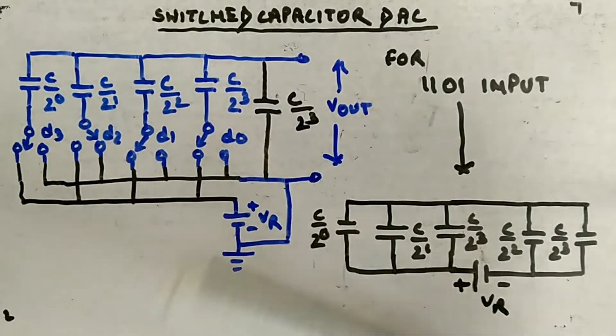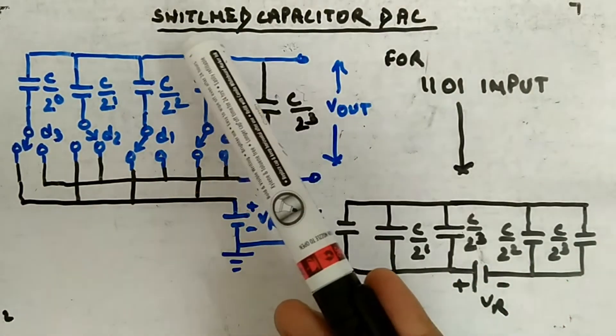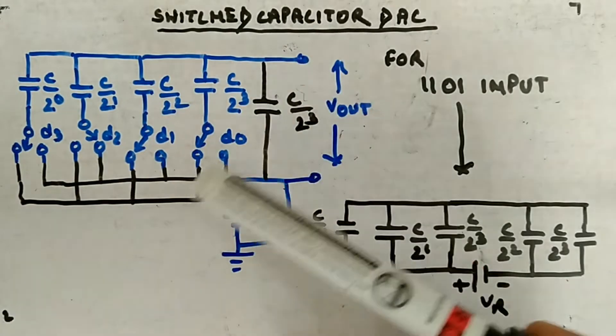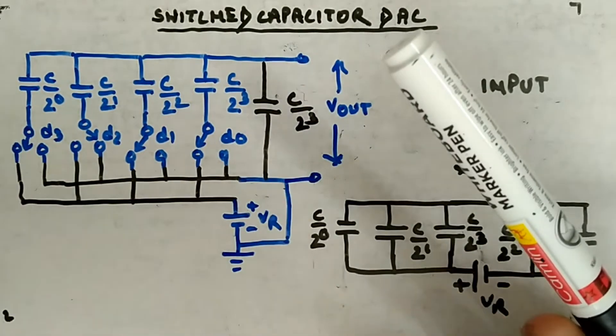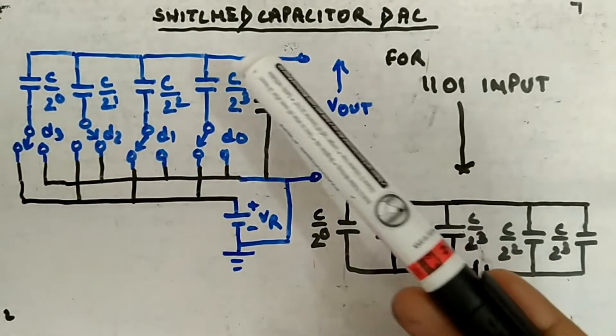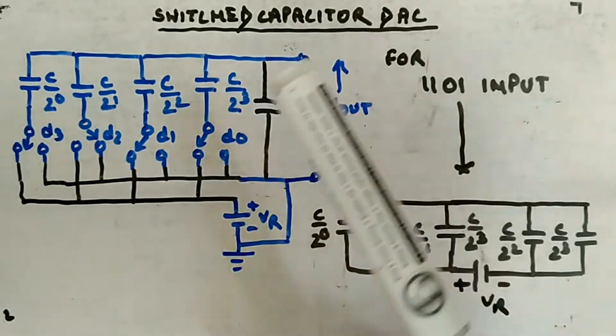Now let's take another type of digital to analog converter, which is called switched capacitor type. So instead of weighted resistors, now you will be having weighted capacitors.